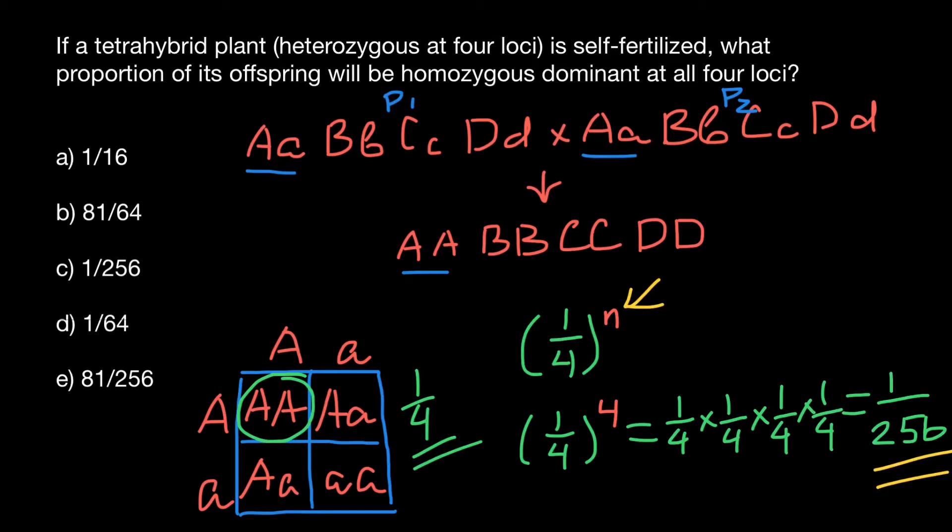Another way to solve this problem. Take a look. The probability that for gene A the progeny will be homozygous dominant is one quarter. For gene B, if we cross these two parents, the probability is also one quarter.